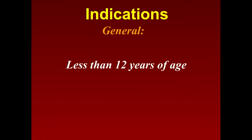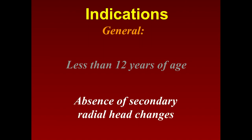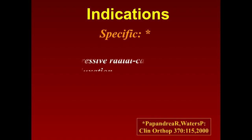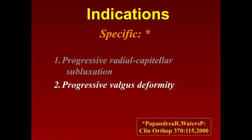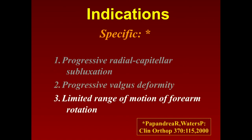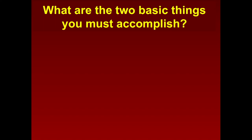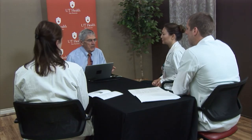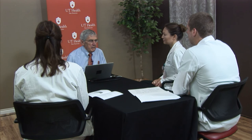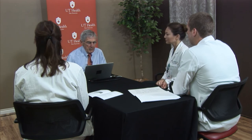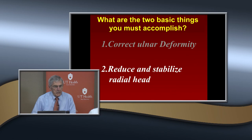The general indications for treatment are: less than 12 years of age; absence of secondary radial head dislocation changes; specific progressive radiocapitellar subluxation or progressive valgus deformity — you probably ought to correct it. Or a limited range of motion of forearm rotation or progressive pain. You decide to repair the residual deformities. What's the first thing you've got to correct? Correct the ulna deformity. Then reduce and stabilize the radial head.